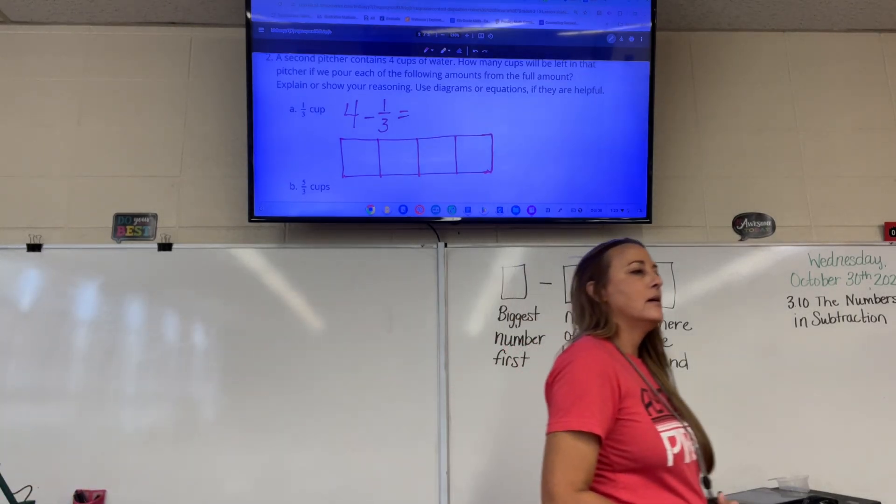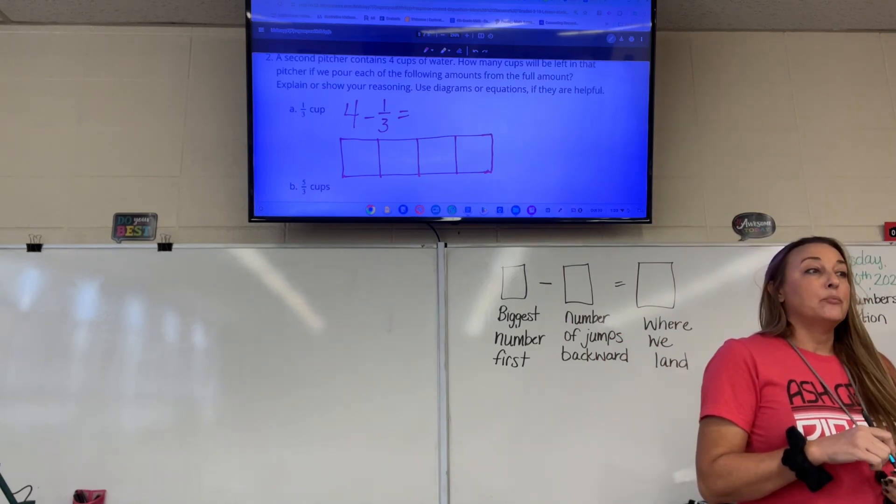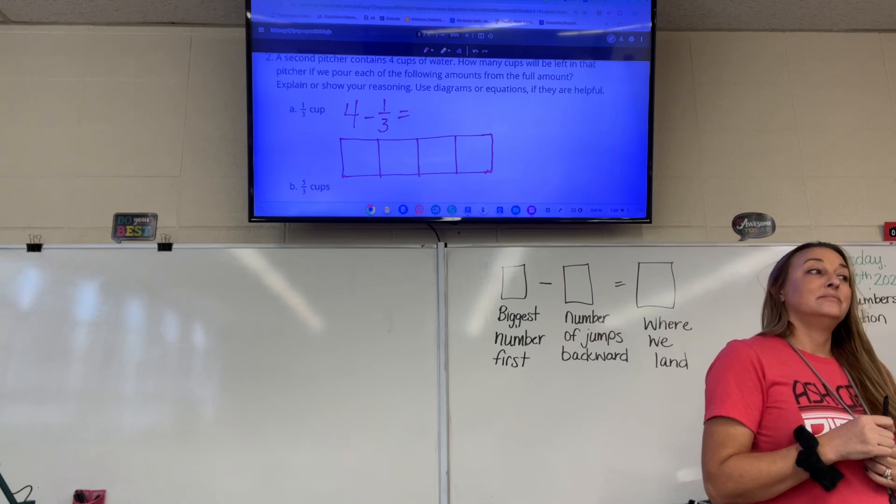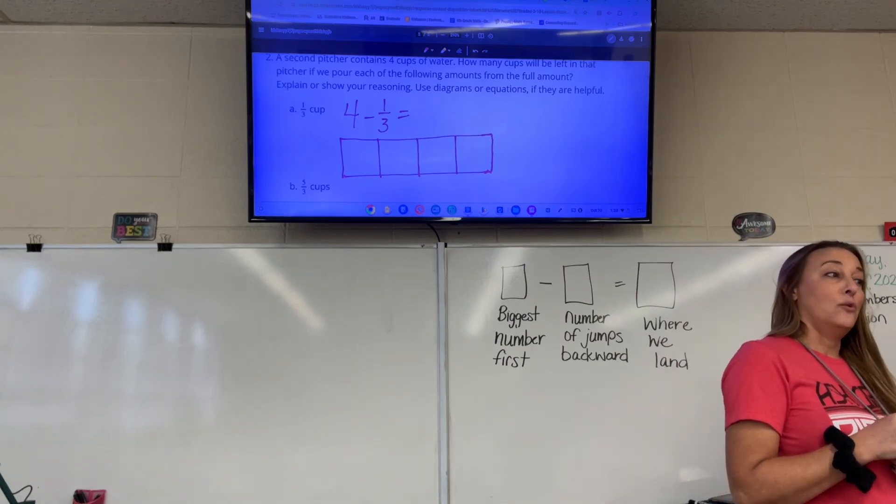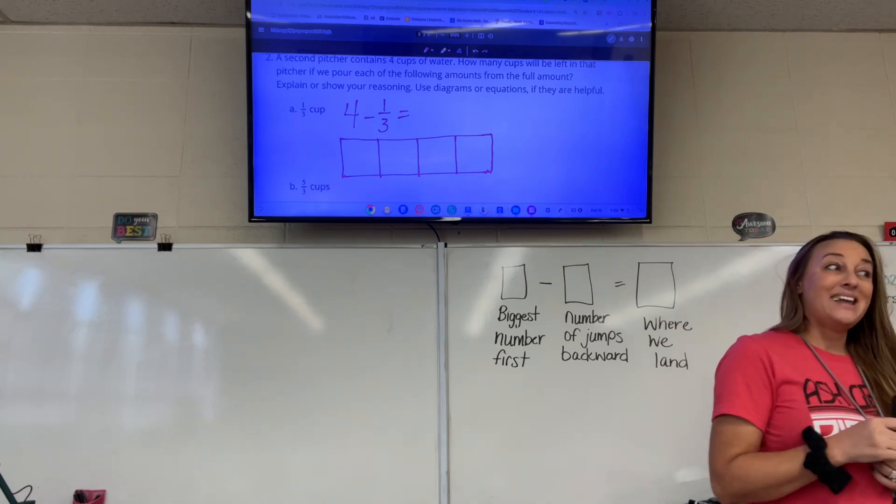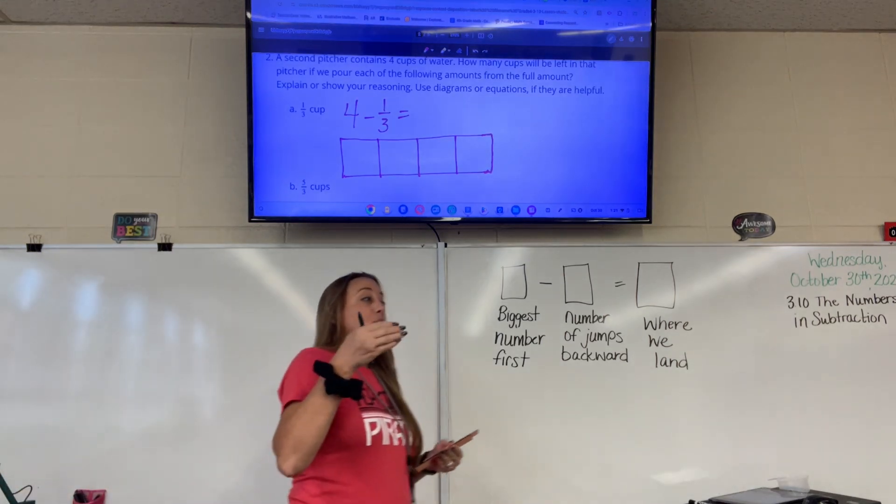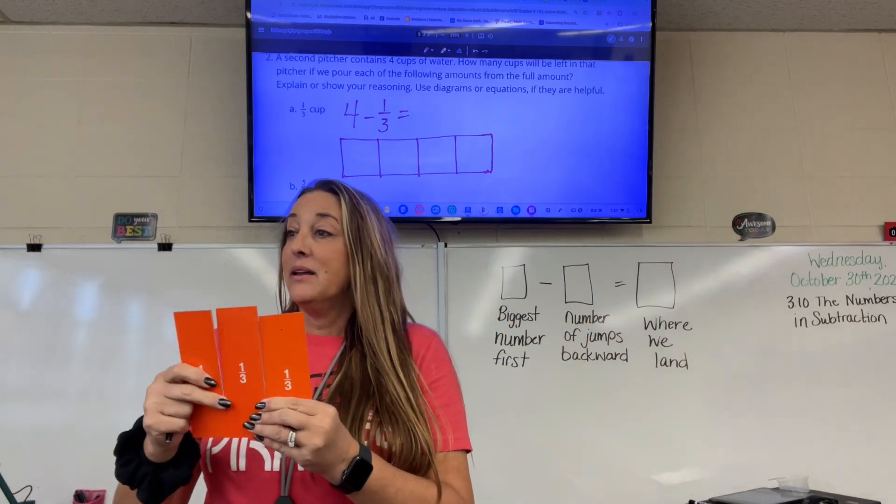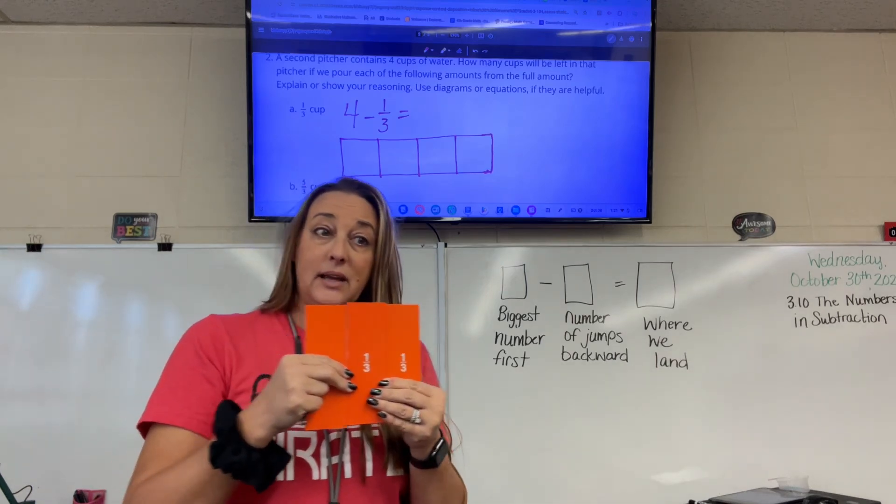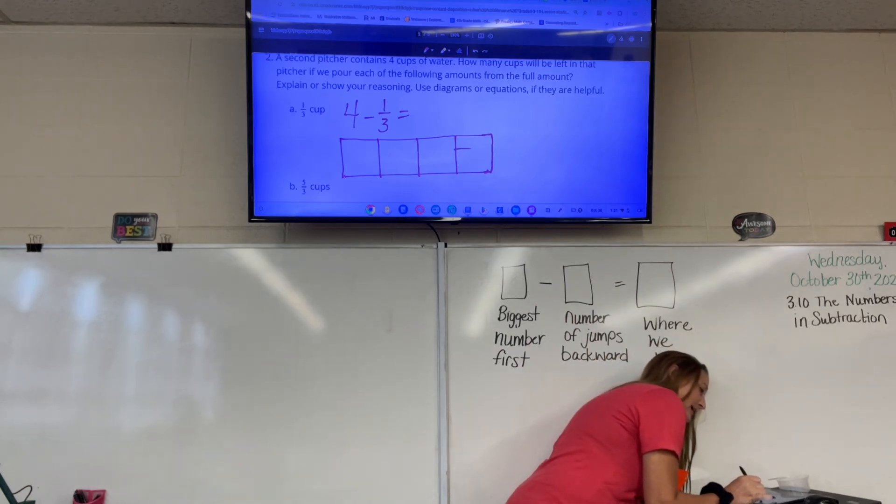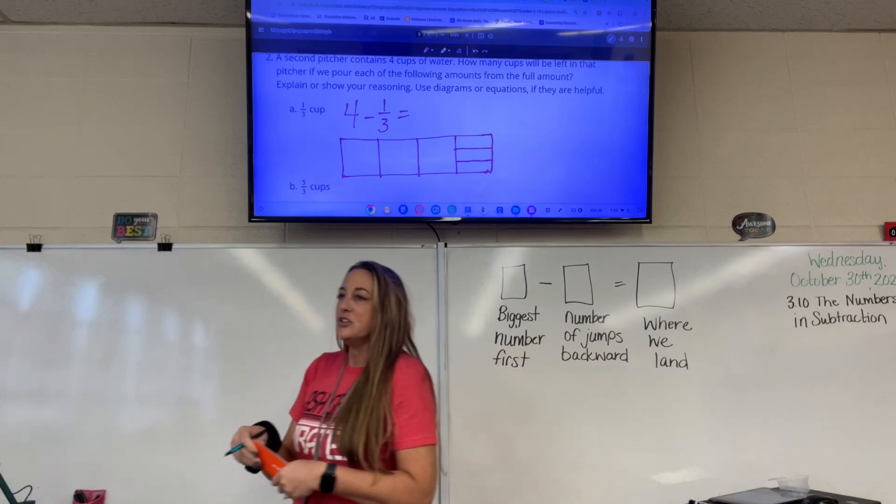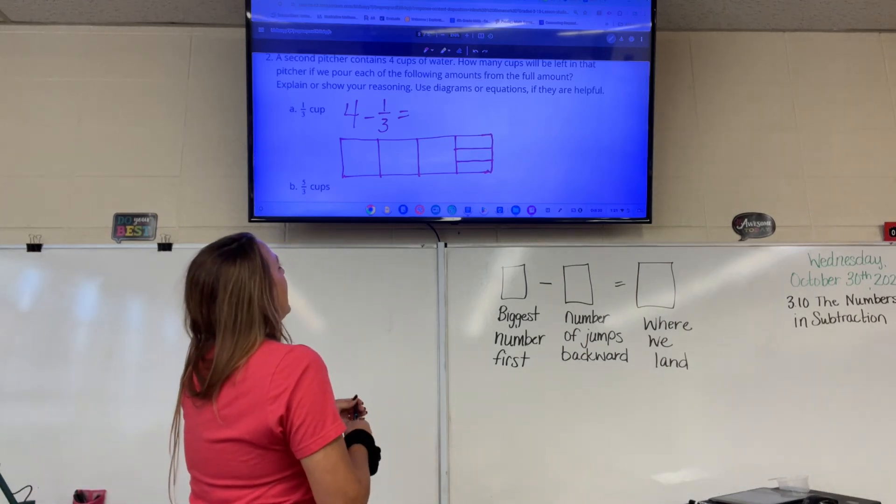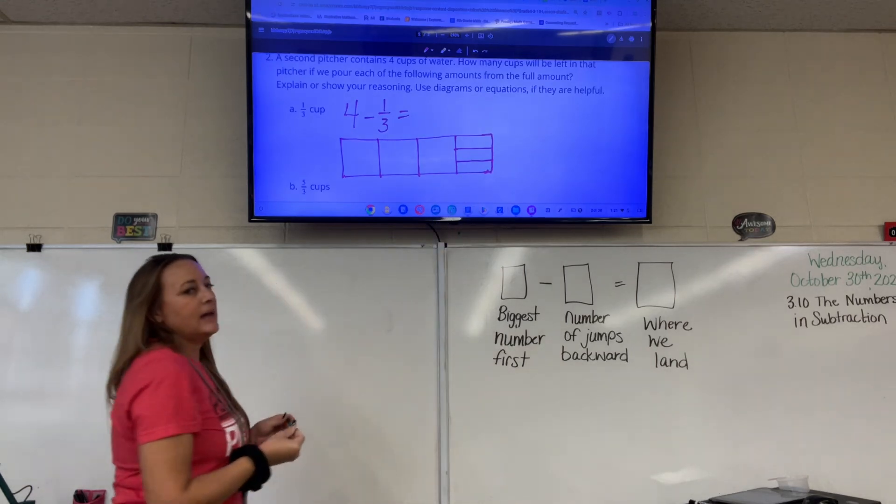If I want to take away one third from four wholes, what do I need to do? Cameron? We've got to break a whole, right? Break it into how many parts, Mary? Look at it again. What are we taking away? One what? So how many thirds are in one whole? Three. So this time, because our denominator is three this time, this is what we're splitting the whole into. Three thirds. So I'm going to split it into three sections. Now I've got one, two, three, four wholes, but one of the wholes got cut into three thirds.